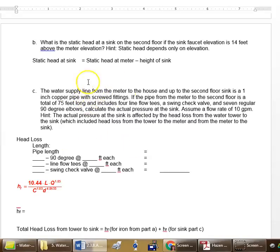Now we want to do a third part here. The water supply line from the meter in the house up to that second floor sink is a one inch copper fitted pipe with screw fittings. And read the rest of this information here. We're basically going to go through the same steps now with this here. So when we look at our table, we're now looking at copper and we're looking at screwed fittings.